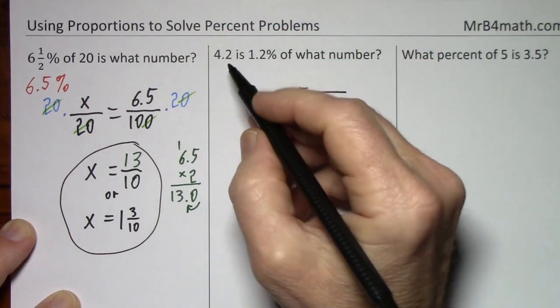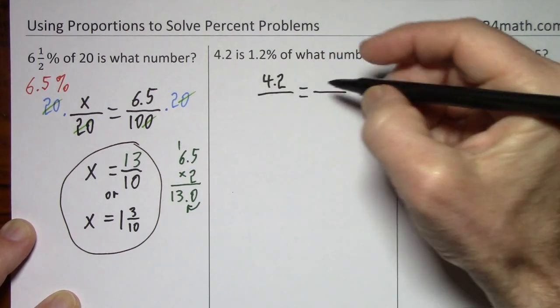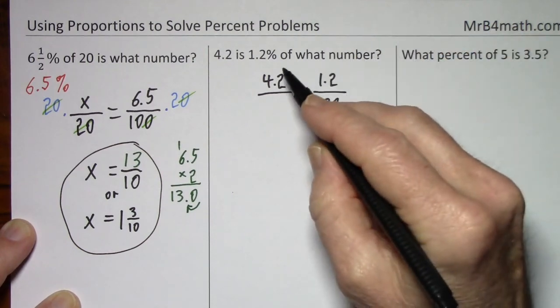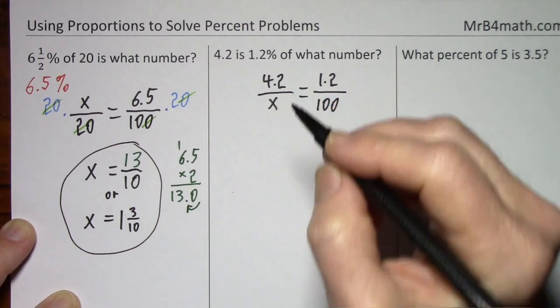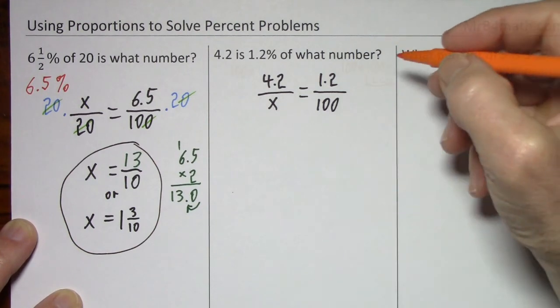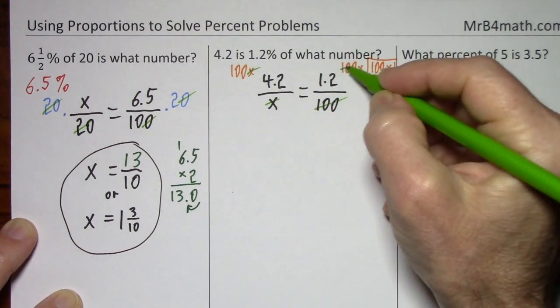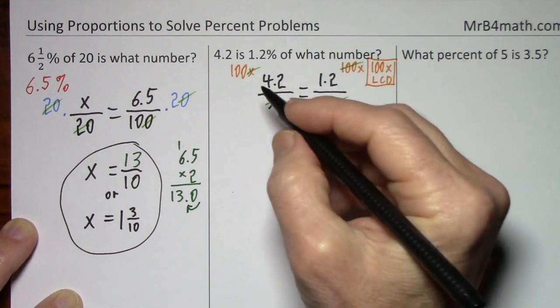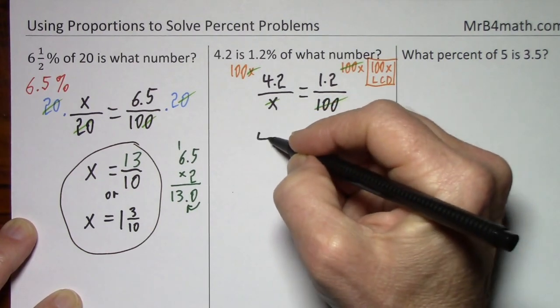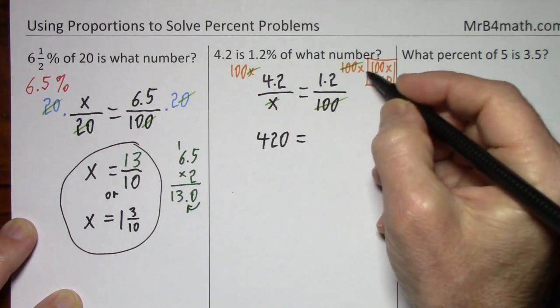4.2 is 1.2%. That's 1.2 over 100. Of what number puts our variable in the denominator? Variables in the denominator, we're going to clear it of fractions. The x's cancel. The 100's cancel. You're left with 100 times 4.2. All you have to do is move the decimal twice. So that gives us 420. Bring down your equals. 1.2x.